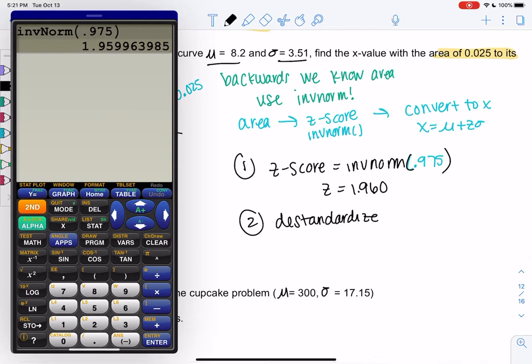So that's x is the mean, 3.51, plus the z-score, 1.960, times the standard deviation. Oops, I mixed up the mean and standard deviation.